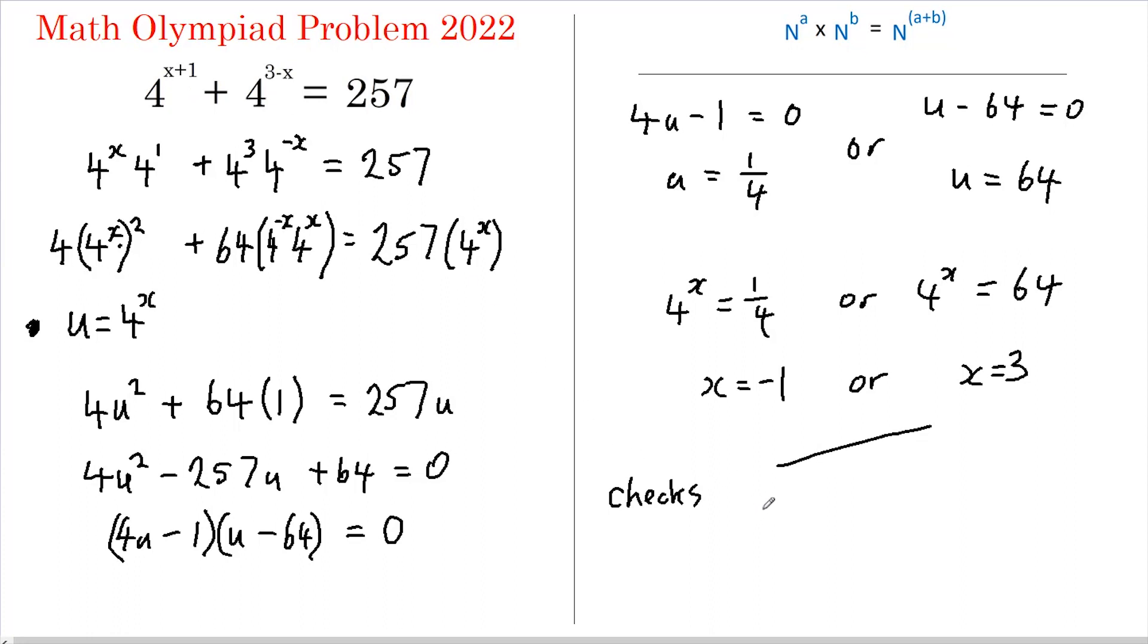Well, 4 to the 0 is 1, 4 to the 4 is 256. So we get 257 which is correct.